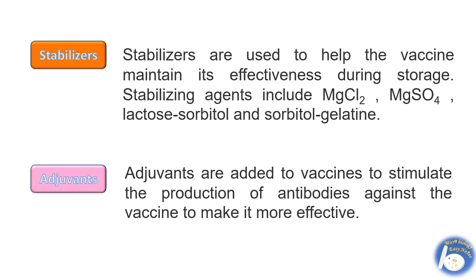Stabilizers are used to help the vaccine maintain its effectiveness during storage. Stabilizing agents include magnesium chloride, magnesium sulfate, lactosorbital, and sorbitol gelatin. Adjuvants are added to vaccines to stimulate the production of antibodies against the vaccine to make it more effective.